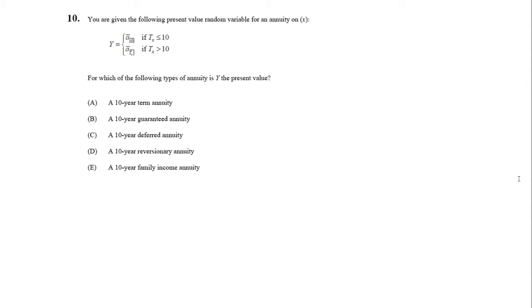We're given the following present value random variable for an annuity on age X. The first case is a 10-year term annuity and the second case is a whole life annuity that depends when the person is dead. The first case will pay whether or not the person is dead or alive; the second one will pay only if the person is alive.